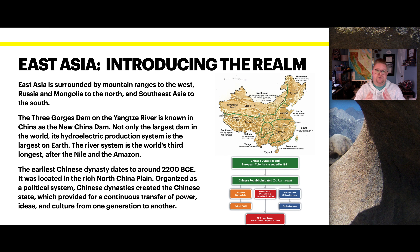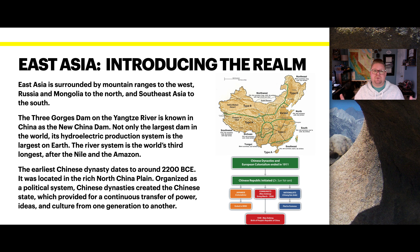The Three Gorges Dam on the Yangtze River is known in China as the New China Dam. Not only the largest dam in the world, its hydroelectric production system is the largest on Earth. The river system is the world's third largest after the Nile and the Amazon. Although the main purpose at this point is hydroelectric energy, the original purpose was specifically to prevent flooding.